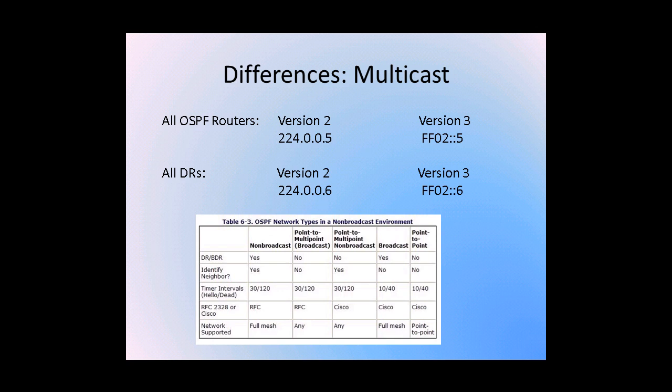To describe in slightly more detail the difference in multicast addressing between Version 2 and Version 3, I have compiled a small chart to show these exact addresses. For all OSPF routers, in Version 2 the multicast subnet was used with the last octet being the number 5. In Version 3, the multicast designation of FF02 is given with all zeros and a trailing 5. There is a similar case with the all designated router address. I have also included a graphic that will remind you of when OSPF routers will communicate with their neighbors and with the designated and backup designated routers.